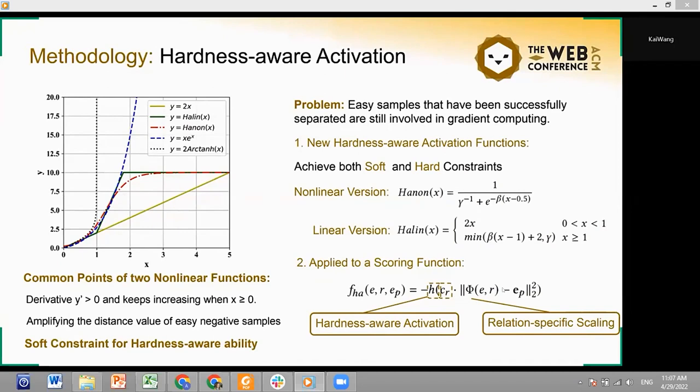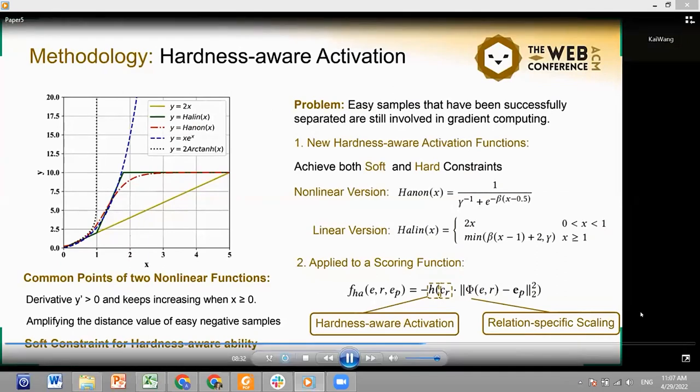To this end, we propose two upper-bounded activation functions to achieve the weight assignment. They have similar values to the previous functions when x is less than 1.5 but have an upper-bound controlled by the gamma. When applying these activation functions to the triple scores, we also employ the relation-specific scaling trick to set different score ranges under different relationships.